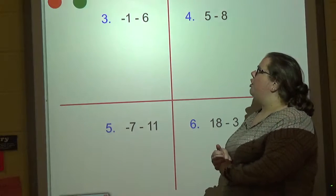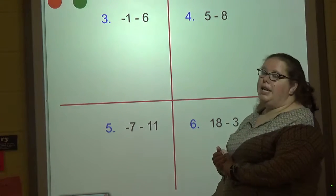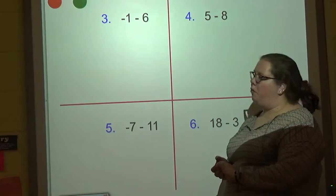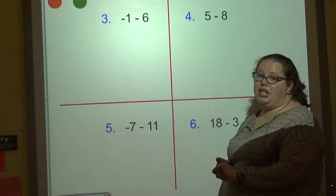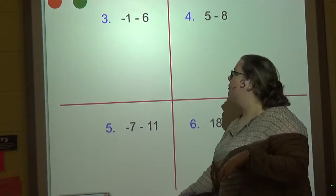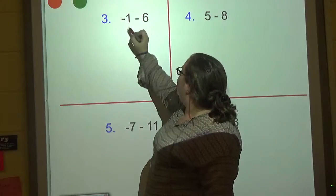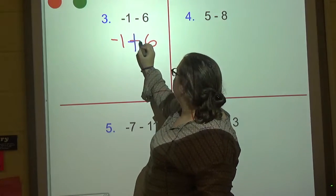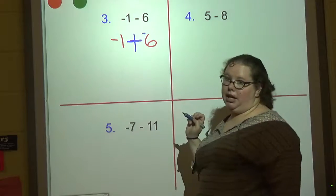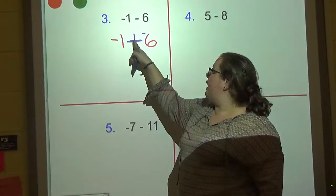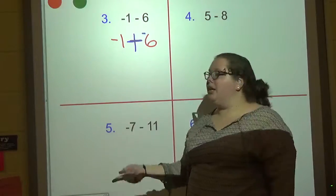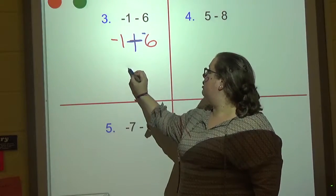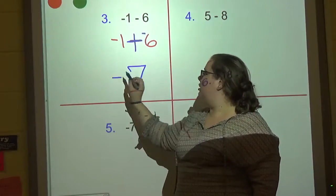Number three: negative one minus six. We're going to change the subtraction — we don't want subtraction, we want addition. So we turn it into negative one plus negative six. Now, negative one plus negative six: same sign — add and keep. We add them together and keep the sign the same: negative seven.